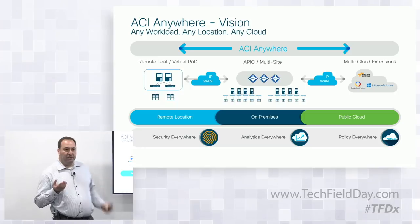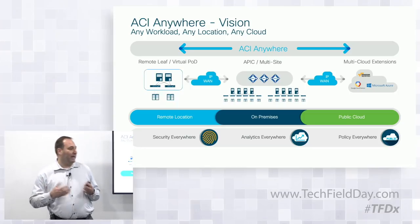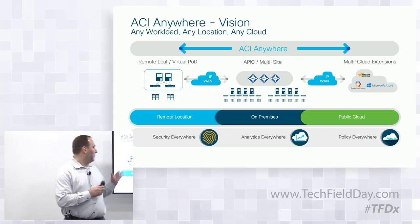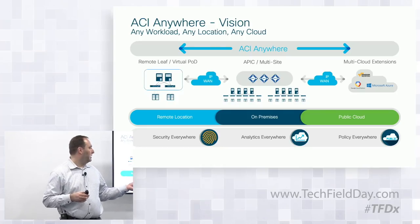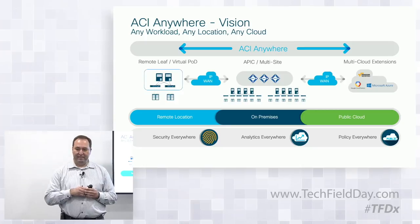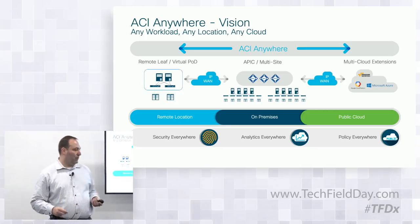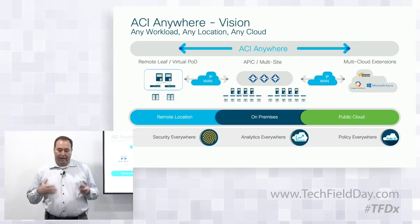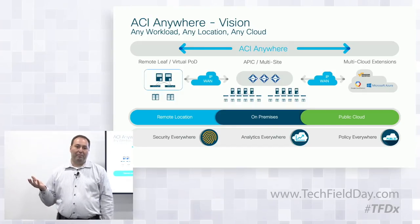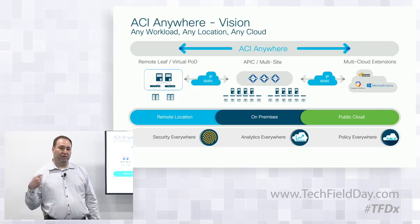The ACI Anywhere vision has been discussed before, but it started really with the on-premises ACI offering — APIC and multi-site, which I'll cover in a second. Then we did a lot of work for the remote location or colo. And today we'll cover more about the public cloud integration, specifically the AWS integration, which is the one that's coming out first.